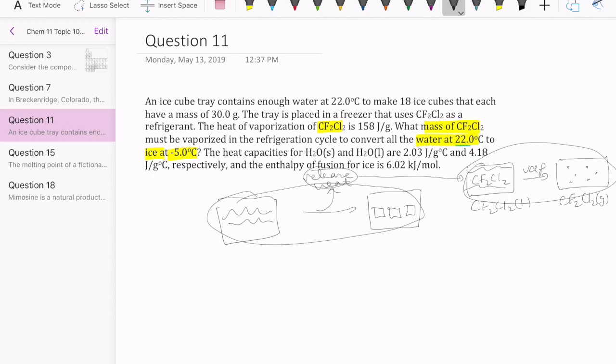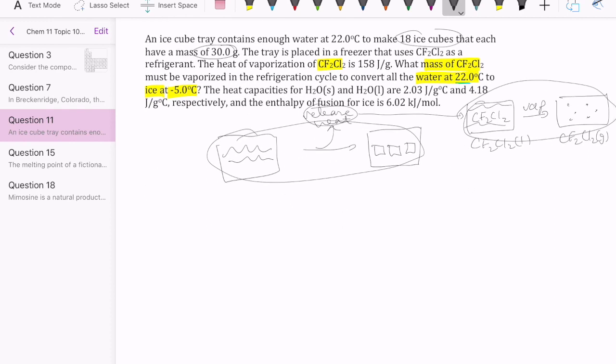Well, the water is given as 18 ice cubes, that's the amount of water you're going to convert from liquid water, and each of the ice cube has a mass of 30 grams. Okay, so you can calculate the total mass here, but let's think about how to solve the problem real quickly.